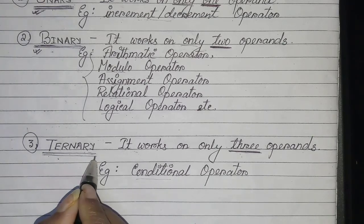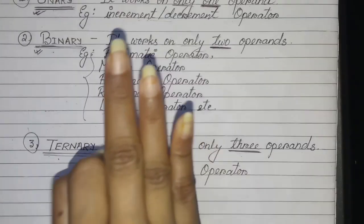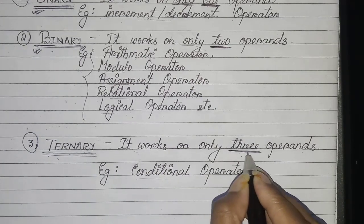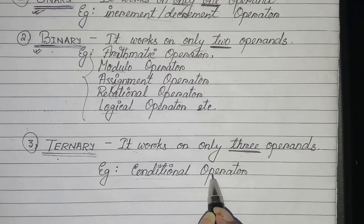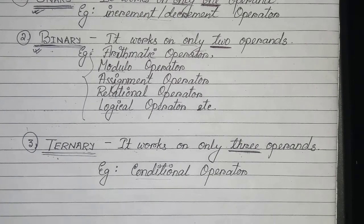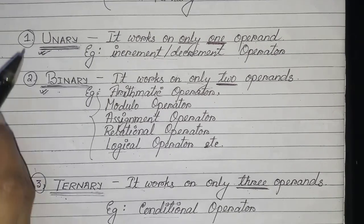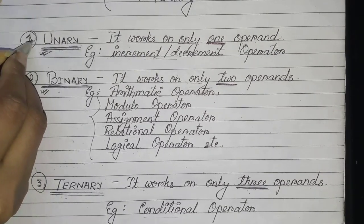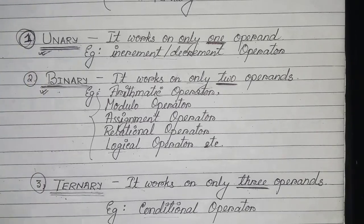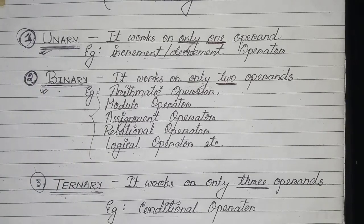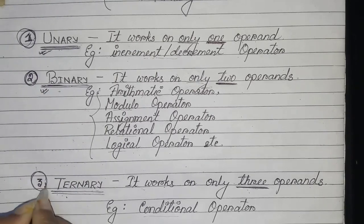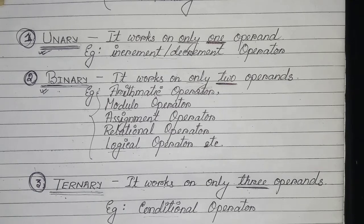Now coming to ternary operator — ternary stands for three, so it works on only three operands, not less and not more than three. Conditional operator is one example of a ternary operator. So basically, unary works on one operand, binary works on two operands, and ternary works on three operands.